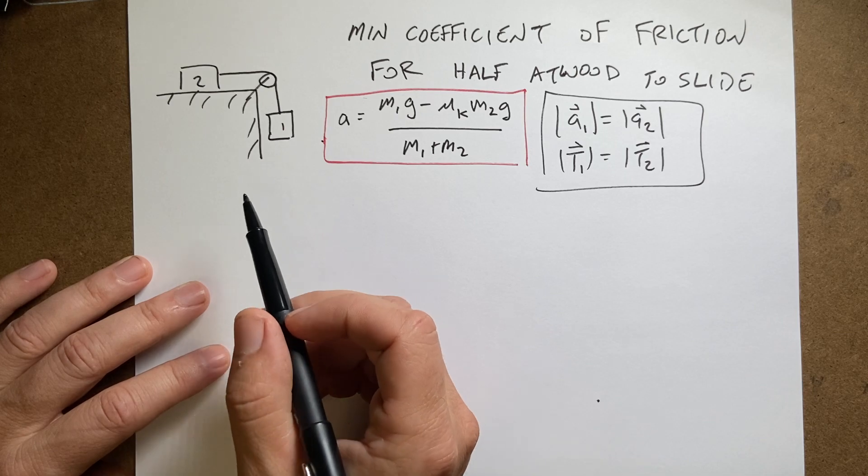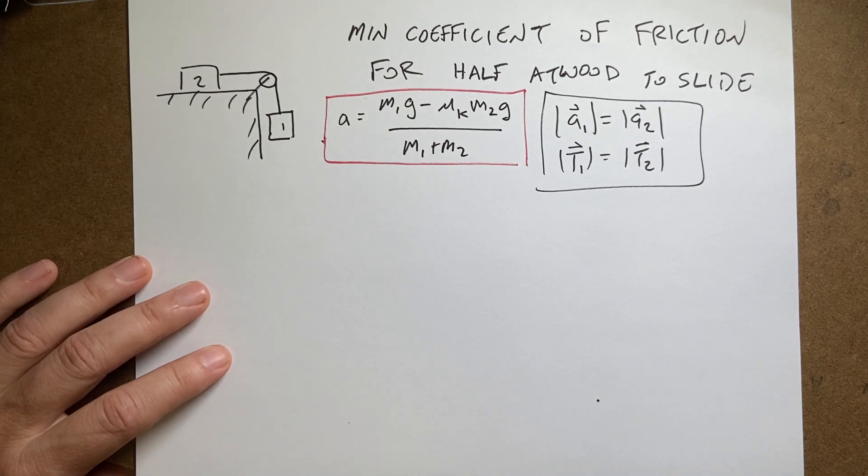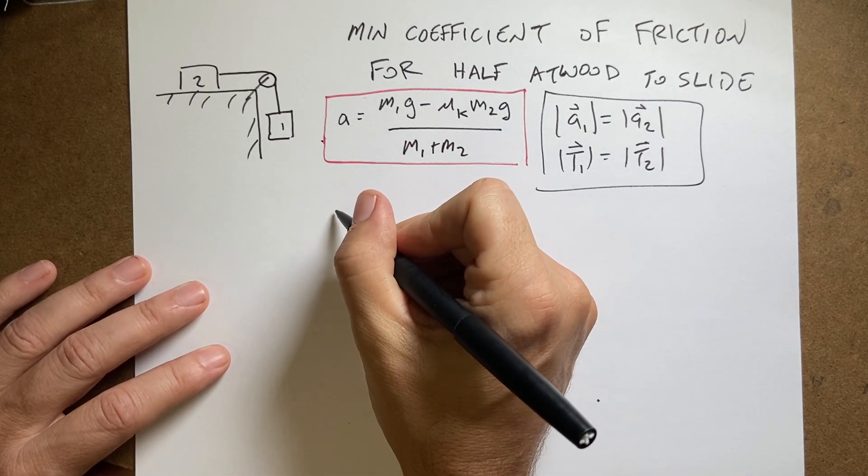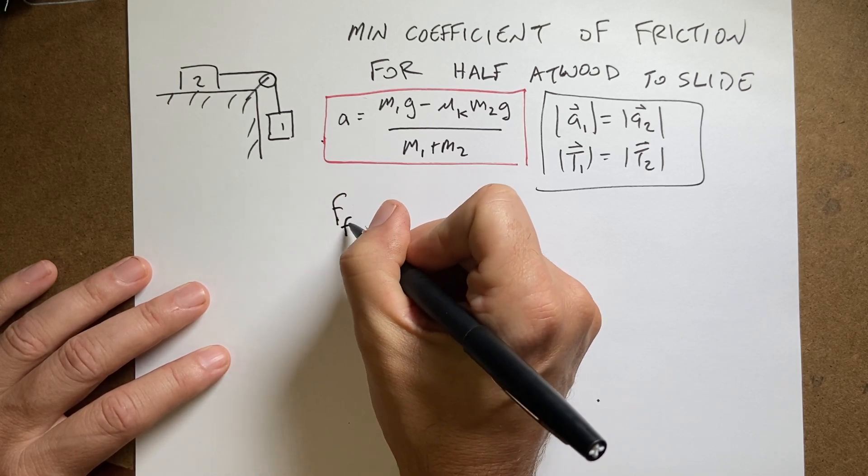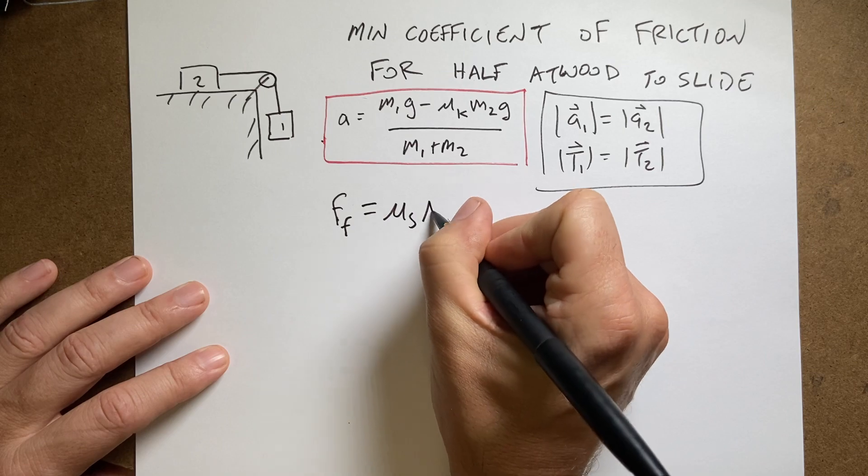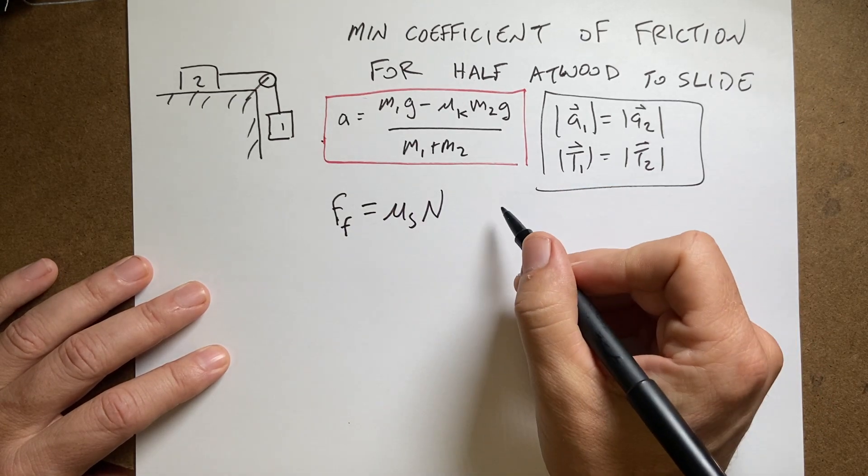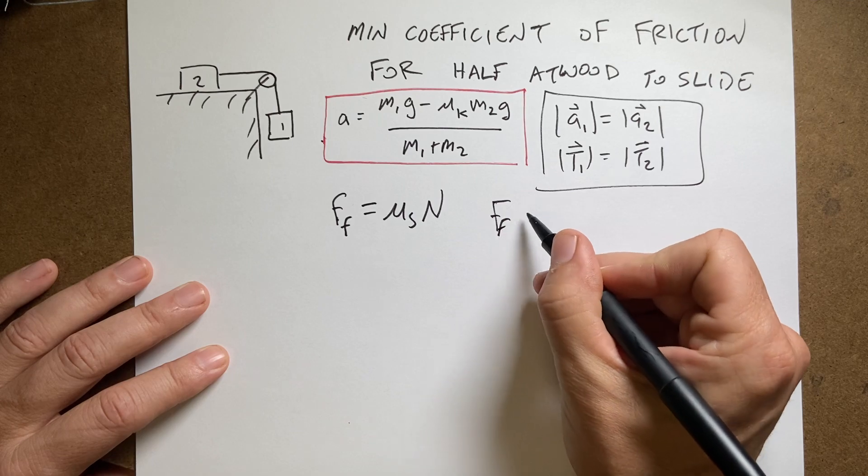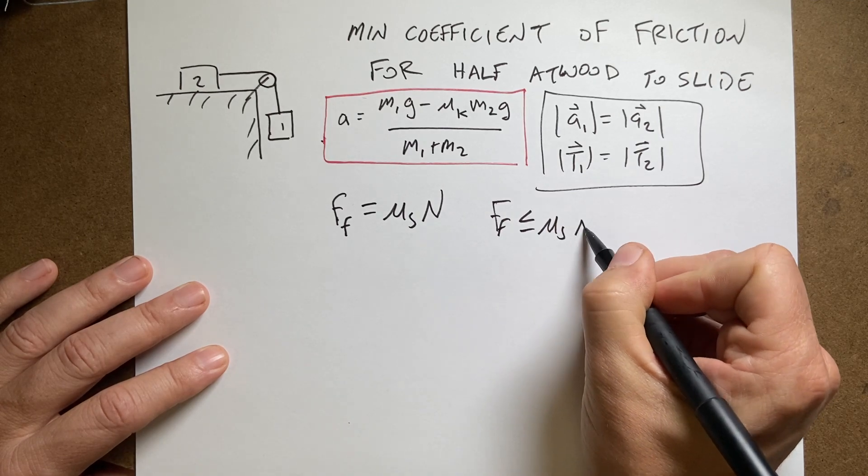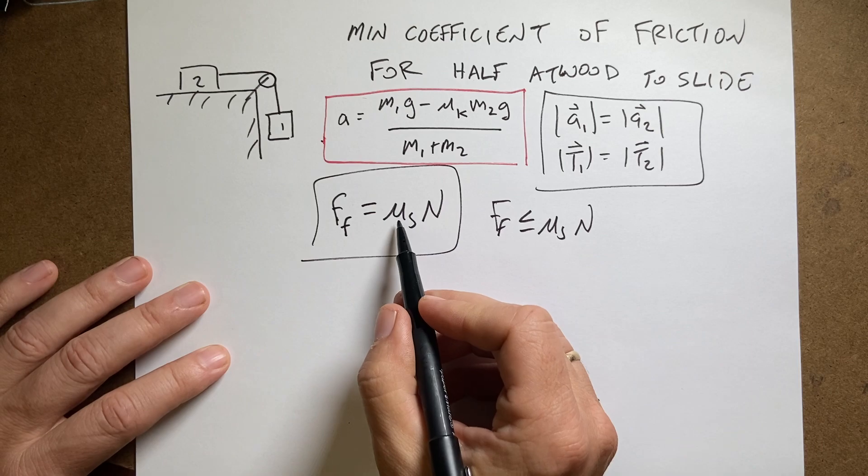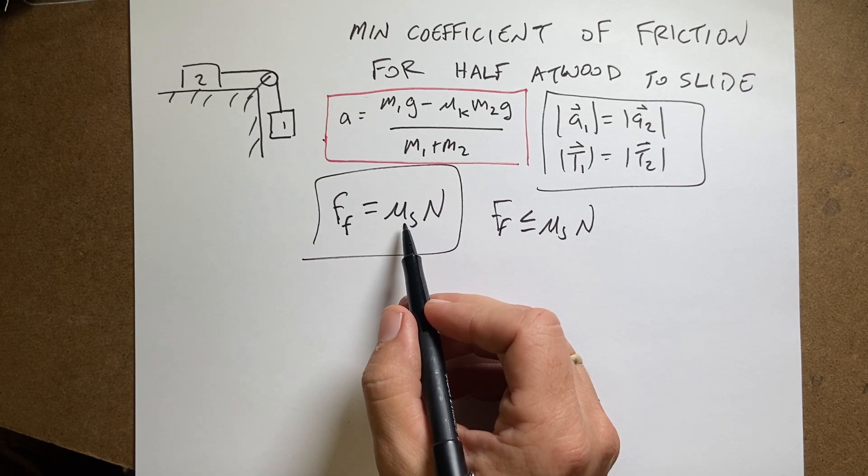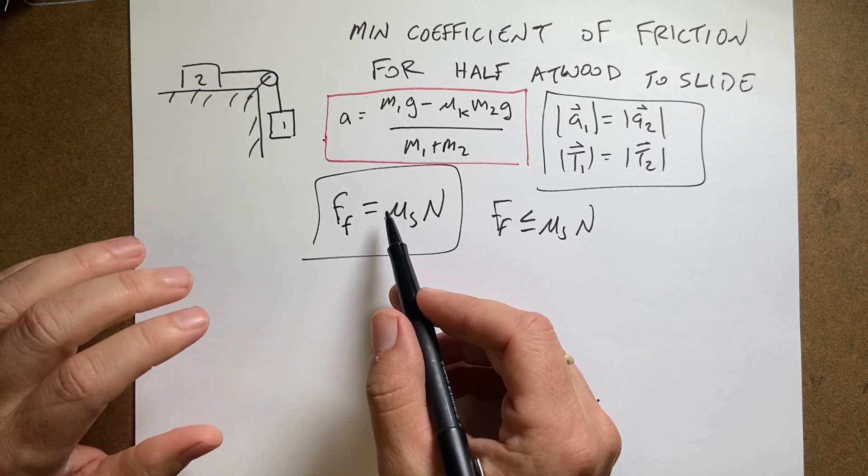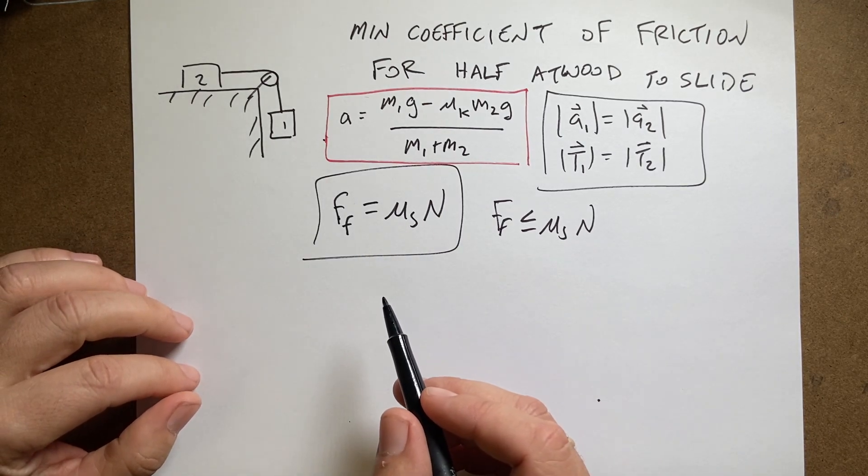Okay, one more thing. If it's at rest and just about to slide, I can use the following model for the frictional force: the frictional force equals the coefficient of static friction times the normal force. Normally it would be less than or equal to μs times N, but we're at the minimum possible coefficient of friction, so we set it equal to that, which gives the maximum force.